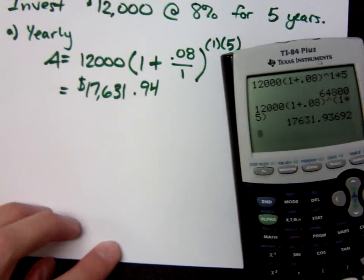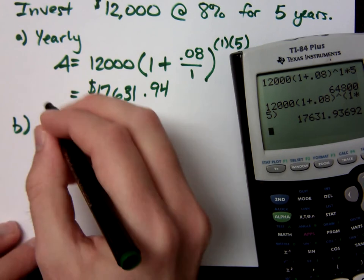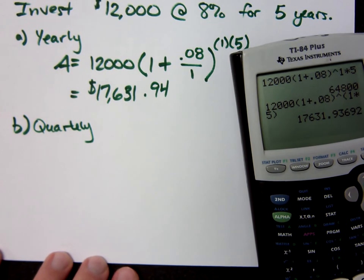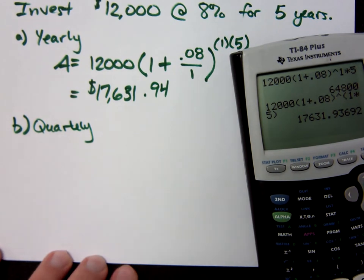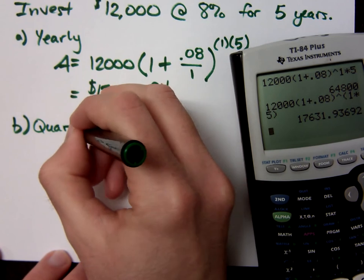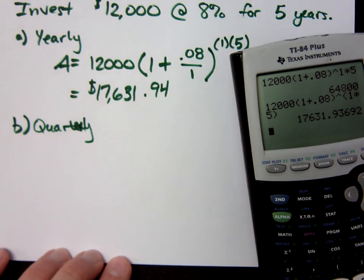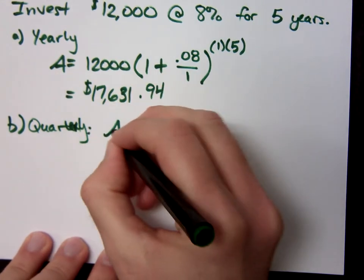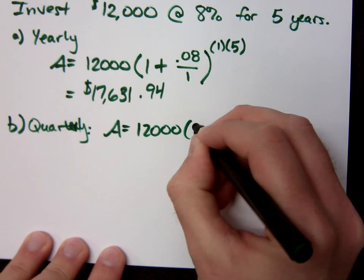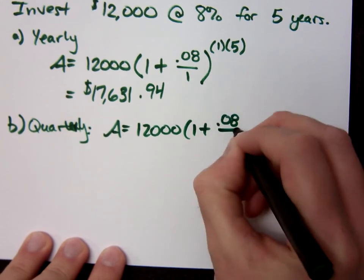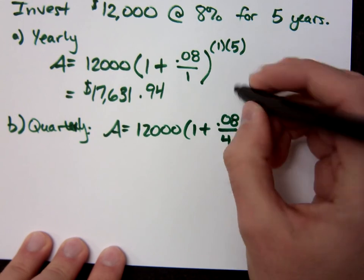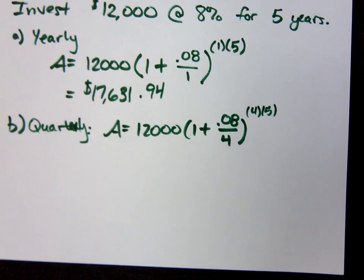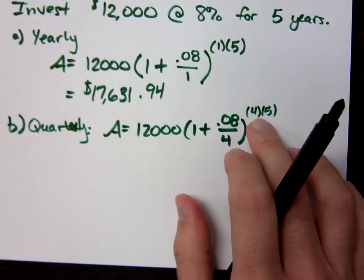Now, what do you think would happen if I change this up and I say, I want you to compound this quarterly. If I compound this quarterly, that means my amount is 12,000, 1 plus .08 divided by what? Raised to the what? So if it's quarterly done for five years, how many total compoundings is that? 20. That's what the 4 times 5 is right here.